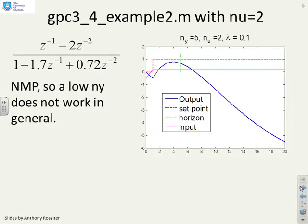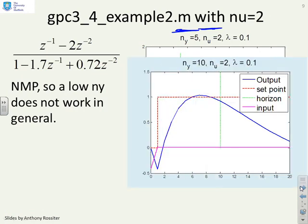Second example then. You remember this second example had a non-minimum phase characteristic. So here, if I'm using a low output horizon and nu equals 2, it's fairly clear that those predictions are poor. So this is not a good choice of horizons for this particular system. If I increase the output horizon up to 10, it's looking a little bit better, but you still look at this bit over here and it's clear that these predictions are pretty poor, and any optimisation based on this is not taking account of the long term, and therefore is not well posed.